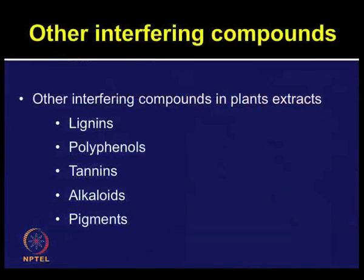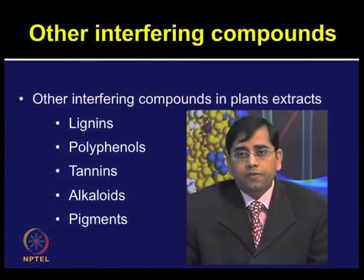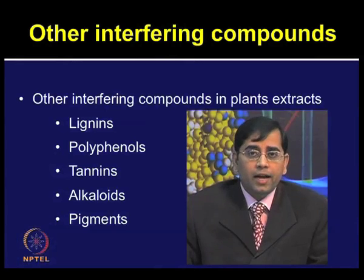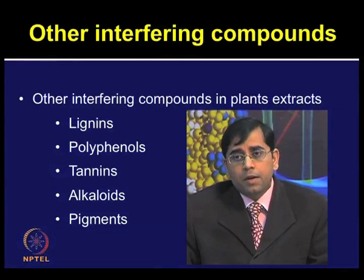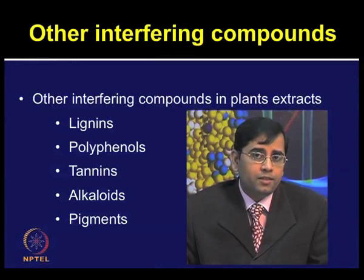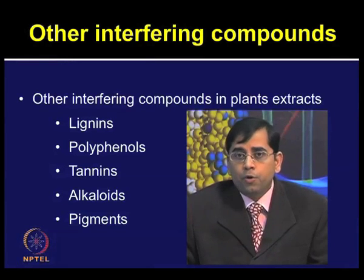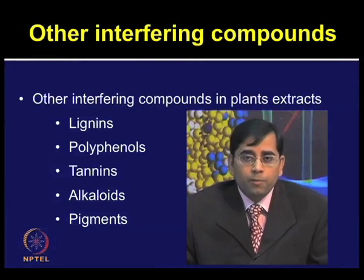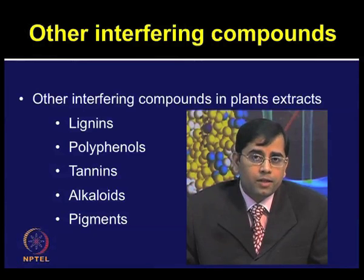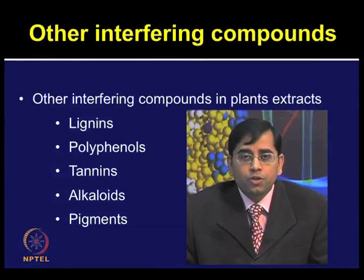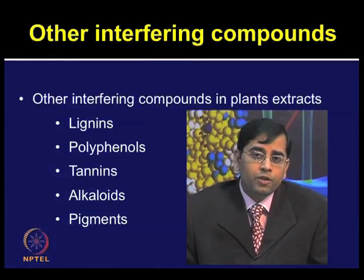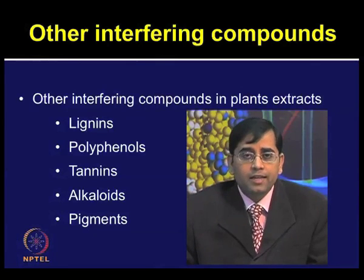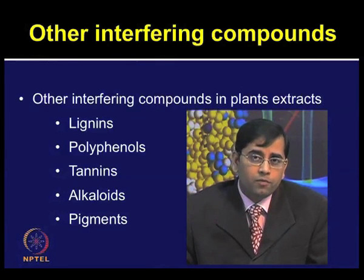SDS-solubilized samples can be diluted using high concentrations of non-ionic or zwitterionic detergents such as CHAPS or Triton X-100. This step will ensure the final SDS concentration is less than 0.25%, otherwise your isoelectric focusing will be hampered. We have talked about different types of interfering components, but this is not the end of the list — depending on your unique biological sample, you may encounter more interfering compounds and need to come up with creative ways to remove them.